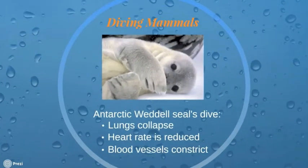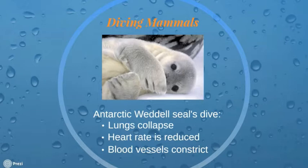If humans have such trouble with diving, how do other diving mammals do it? The Antarctic Weddell Seal is an expert diver capable of reaching 600 meters of depth and staying underwater for over an hour. While preparing to dive, the seal breathes out instead of hyperventilating. During the dive, its lungs completely collapse, circulation shuts down, and heart rate is reduced from 60 to 1.5 beats per minute. The seal's blood vessels constrict, keeping blood pressure constant. The seal's brain requires less than 1% of its metabolic activity, compared to 15% that a human brain needs, making seals far better divers.